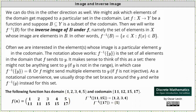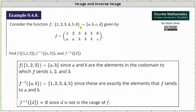Let's look at one more example. We have a function F that maps the set with elements 1, 2, 3, 4, 5, 6 to the set with elements A, B, C, and D, given by the function shown in two-line notation. First we're asked to find the image of the set with elements 1, 2, and 3 under F, which is equal to the set containing the elements that are the images of 1, 2, and 3 from the domain.